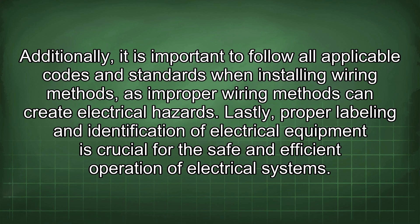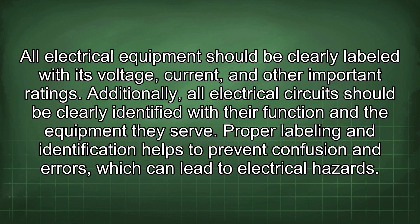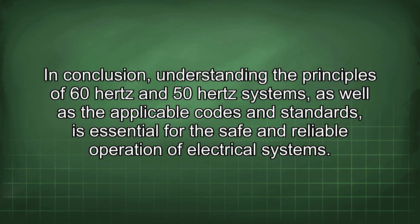Lastly, proper labeling and identification of electrical equipment is crucial for the safe and efficient operation of electrical systems. All electrical equipment should be clearly labeled with its voltage, current, and other important ratings, and all electrical circuits should be clearly identified with their function and the equipment they serve. Proper labeling helps to prevent confusion and errors that can lead to electrical hazards. In conclusion, understanding the principles of 60Hz and 50Hz systems, as well as the applicable codes and standards, is essential for the safe and reliable operation of electrical systems.